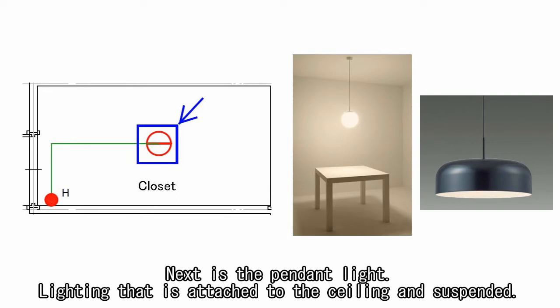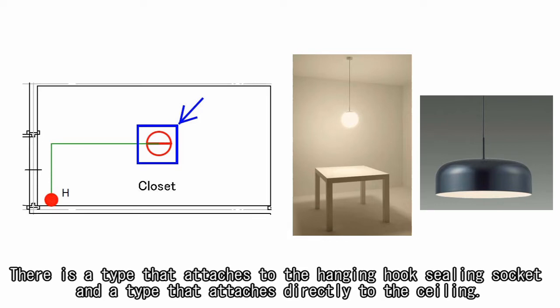Next is the pendant light, lighting that is attached to the ceiling and suspended. There is a type that attaches to the hanging hook ceiling socket and a type that attaches directly to the ceiling.